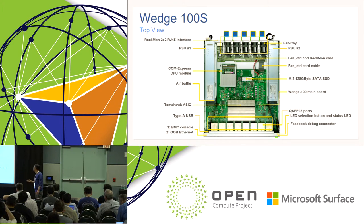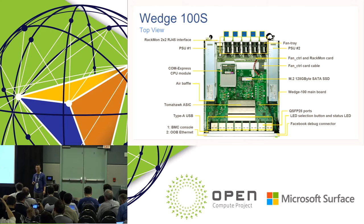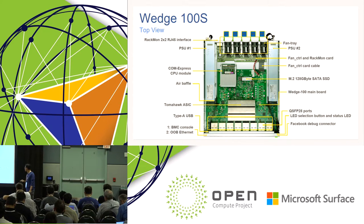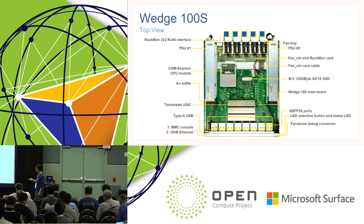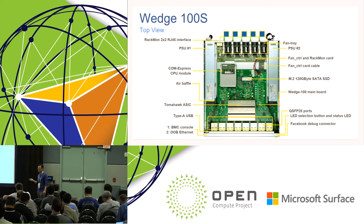This is a top view of Wedge 100S. There is a limitation that comes with the flat design: as you can see, the PCB traces from the Tomahawk ASIC to all the QSFP28 ports are not exactly the same length. At 25 Gbps per lane speed, these PCB traces play an important role in the overall channel budget. So for the edge ports, the loss is relatively higher, and we allocate optics and shorter DAC cables to those ports. The middle ports can be used for longer DAC cables. This approach enables us to meet the end-to-end channel budget for all ports.